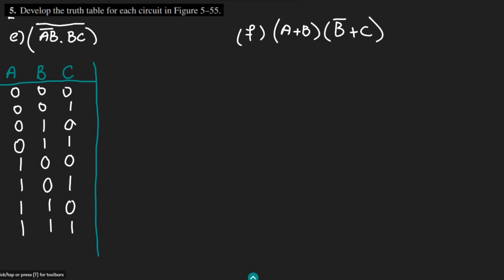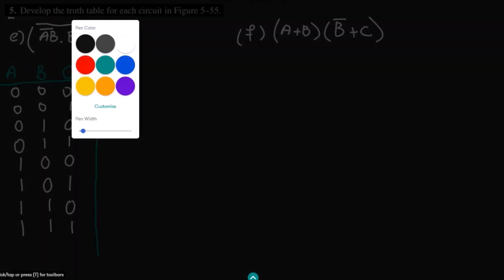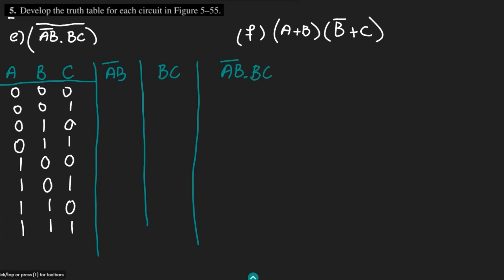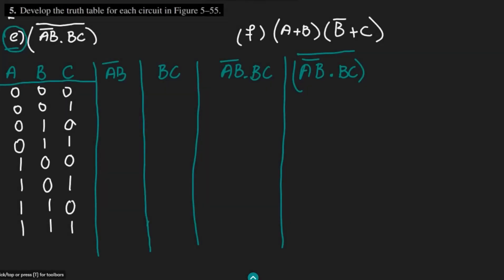On the basis of these inputs we have to find the values. For part e, I will split the expression into parts: first AB complement, then BC, then AB complement · BC, and then the whole complement of AB complement · BC. In this manner we have split part e into sub-parts which will make it easier to solve.